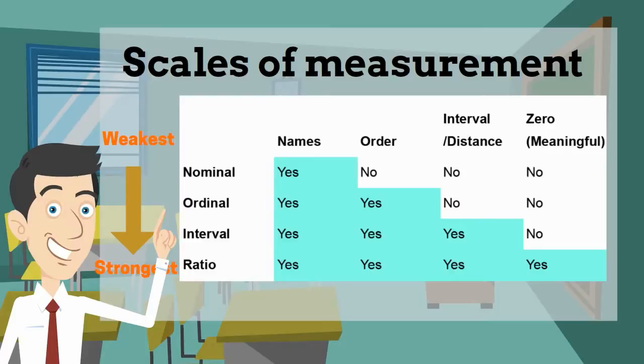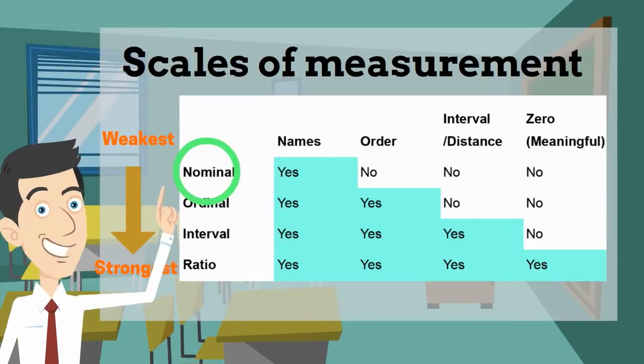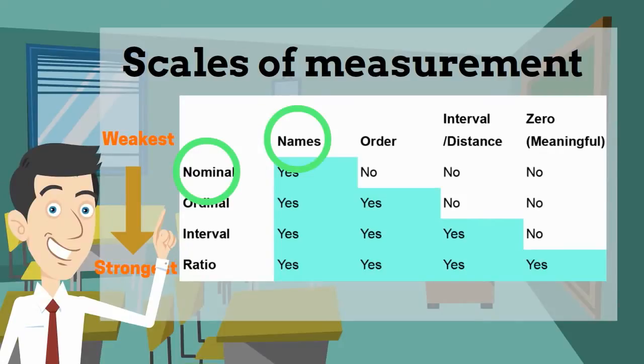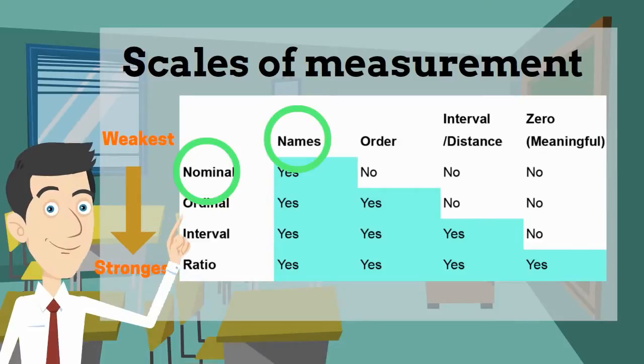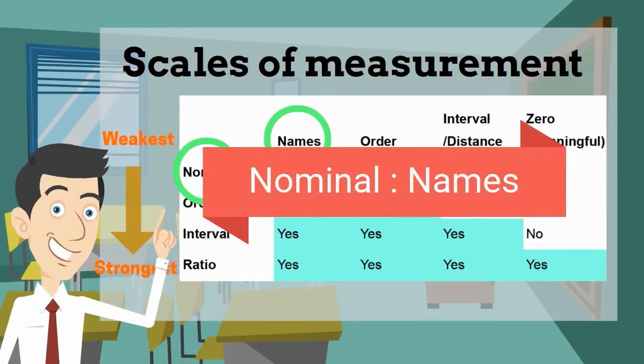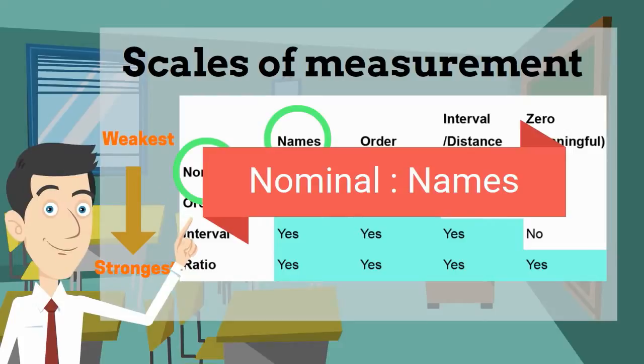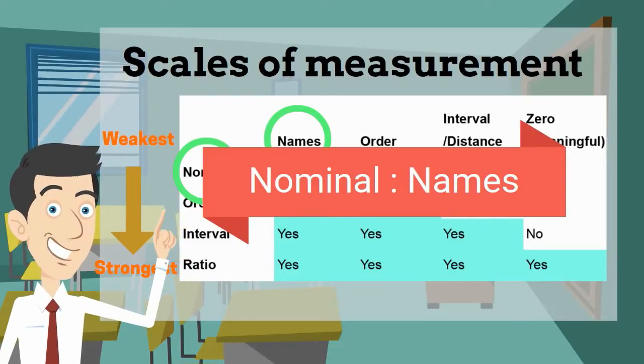So the weakest one on the top is nominal. Nominal data is only names or labels to various categories which cannot be quantified and have no order. So an easy way to memorize this is: think about nominal only have names, and they both share the same first letter which is N. So names, nominal, names, nominal - it's very easy to associate. Examples can be gender like male or female, or flavor like vanilla or chocolate, or different types of groups or different colors.